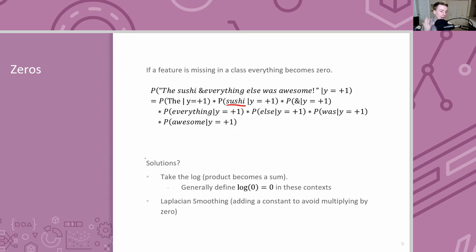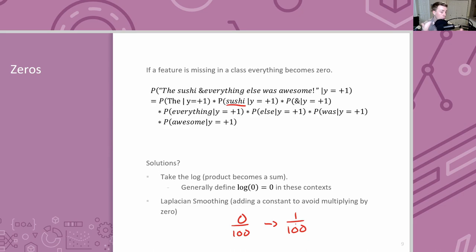Another common approach is Laplace smoothing: always use at least some small constant count for a word even if you never saw it. Instead of a zero count out of 100, you transform it to at least 1 out of 100 — putting a prior belief that every word has some small likelihood. The specific smoothing value is a hyperparameter. In practice, Naive Bayes implementations almost always use log-sums rather than products, and Laplace smoothing to remove zero-probability terms.